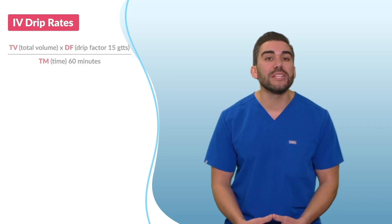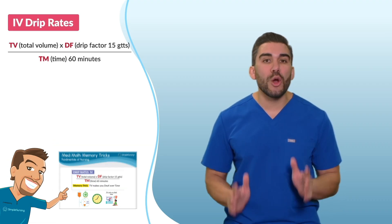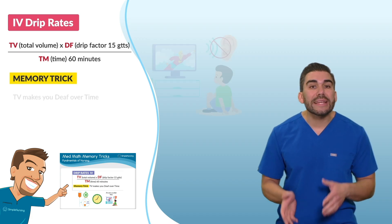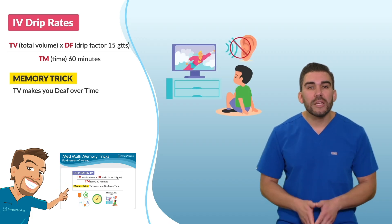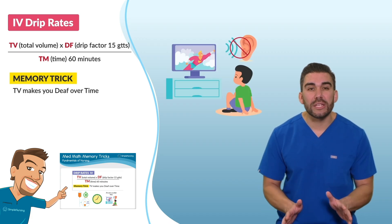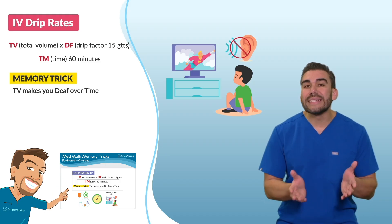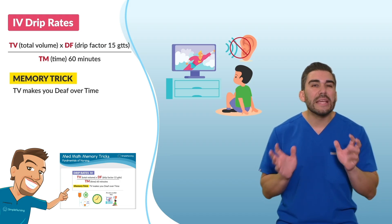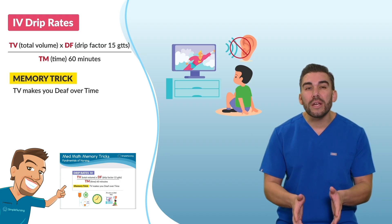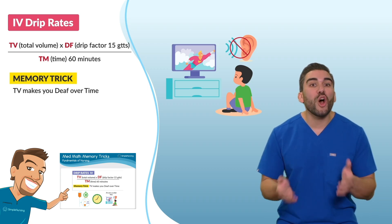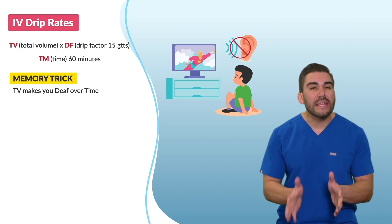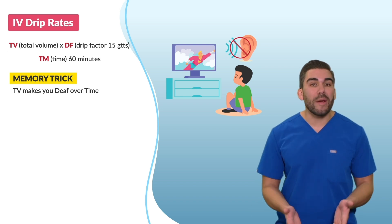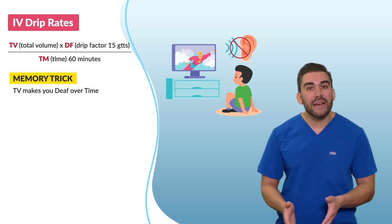Now let's dive into dosage calculation — some nursing schools call it med math. Let's start with the med math memory tricks. First up is IV drip rates; you've got to know these on your exit exam. Use the memory trick: TV makes you deaf over time. TV is total volume, DF — for being deaf — is the drip factor, and you want to know it's 15 drips per minute, put over time. The key number is 60 minutes.